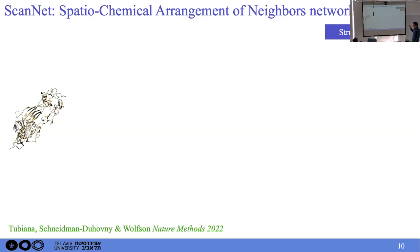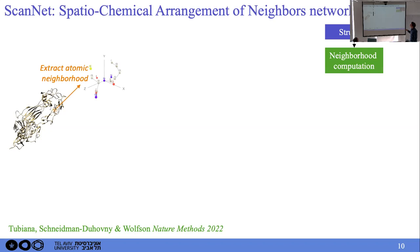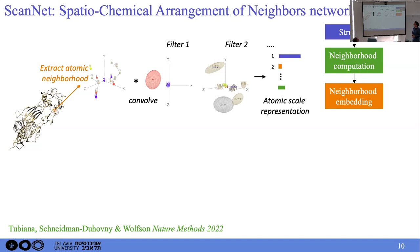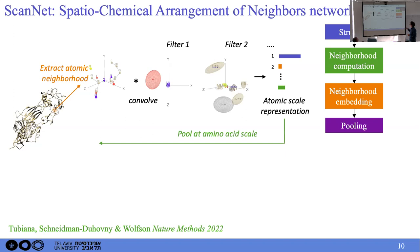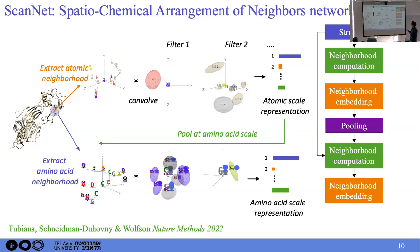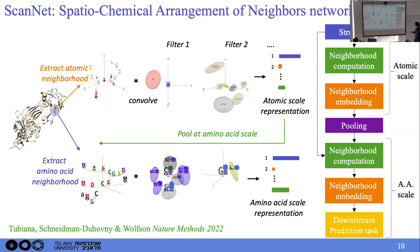We devised an architecture addressing all of these criteria, which we call ScanNet — Spatiochemical Arrangement of Neighboral Networks. The idea is: starting from a protein structure, we first extract an atomic neighborhood around each atom and define a local frame. We then convolve this local point cloud with trainable spatiochemical filters that look for specific patterns, yielding an atomic-scale representation — a vector of entries for every single atom. The next step is to pool this information to the amino acid scale and repeat the process, convolving with trainable filters to obtain an amino acid-scale representation usable for any downstream prediction task.